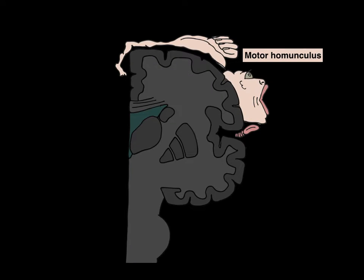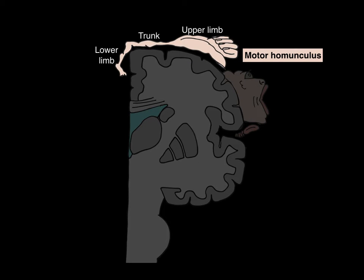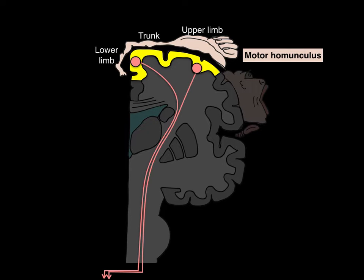The motor homunculus, which means 'little man,' is a map in the precentral gyrus dedicated to processing motor control. You'll notice it's disproportionate — the lower limb, trunk, and then a huge hand — because innervation to more complex areas like the hand is disproportionately represented in the cerebral cortex.